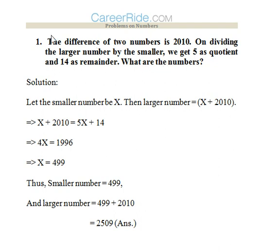First question. The difference between two numbers is 2010. On dividing the larger number by the smaller, we get 5 as the quotient and 14 as the remainder. Then what are the numbers?